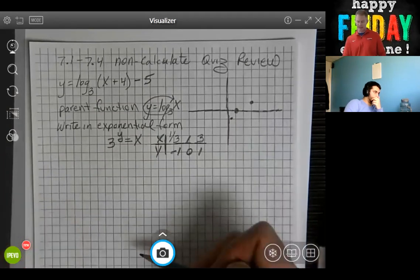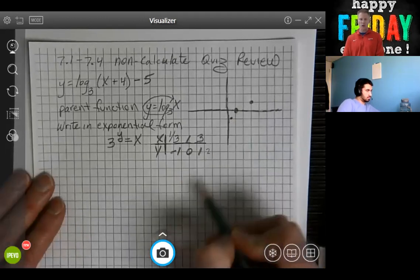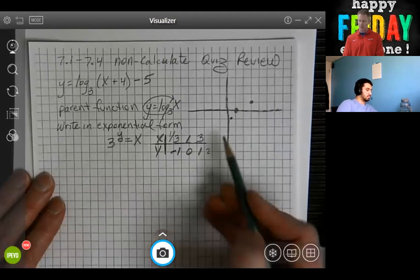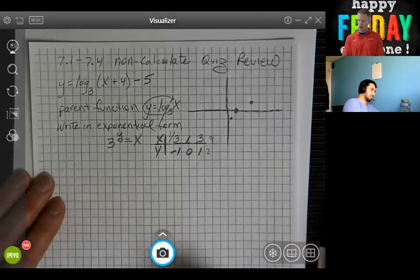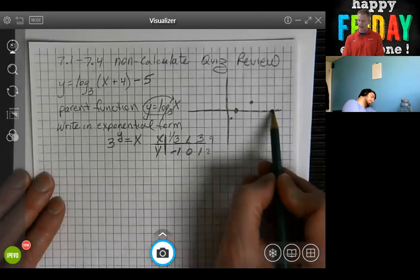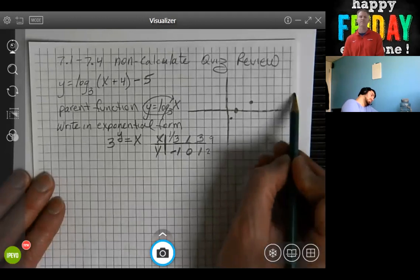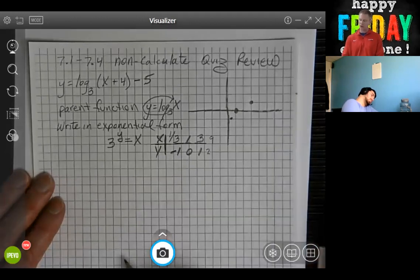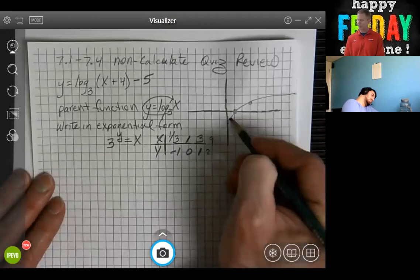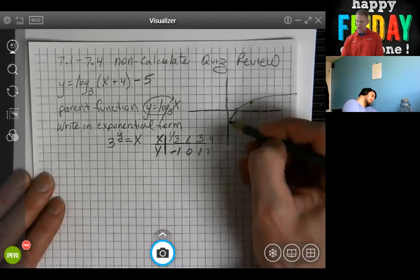Now we could continue this table. You could try 2. And when you do 2 as your exponent, 3 squared is the number 9. So you know that when you're out at 9, you would be up here somewhere where y is 2. That gives you a good understanding of how that's going to look.